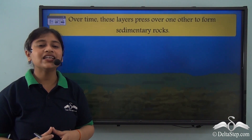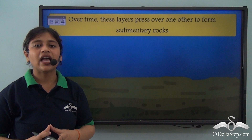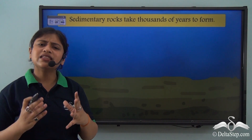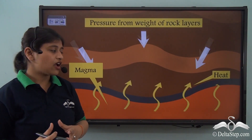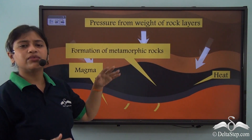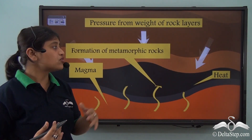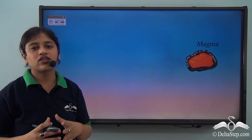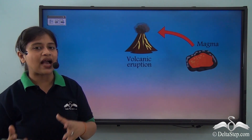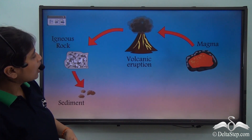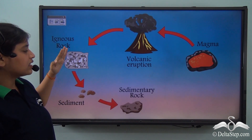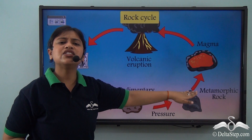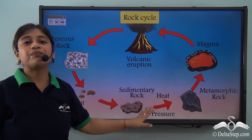Sedimentary rocks are often known as layered or stratified rocks and take thousands and millions of years to form. On receiving heat from magma and pressure from the weight of other rock layers, they give rise to metamorphic rocks. These metamorphic rocks on receiving further heat change back to magma — and the cycle goes on. Volcanic eruption gives rise to igneous rocks, which erode to form sedimentary rocks, which under heat and pressure form metamorphic rocks, which melt to form magma — completing the rock cycle.